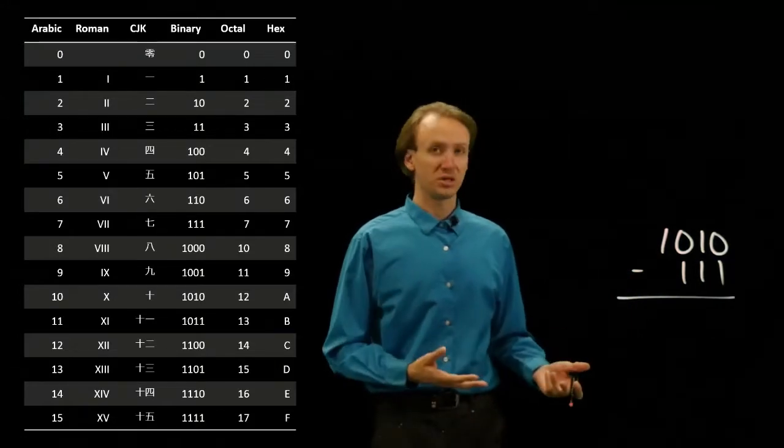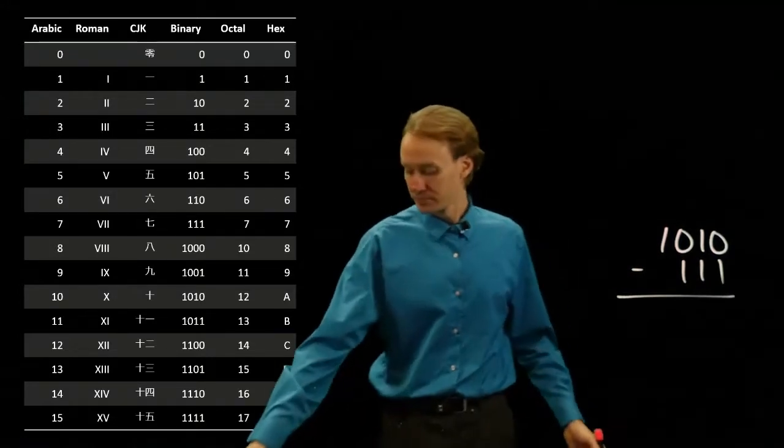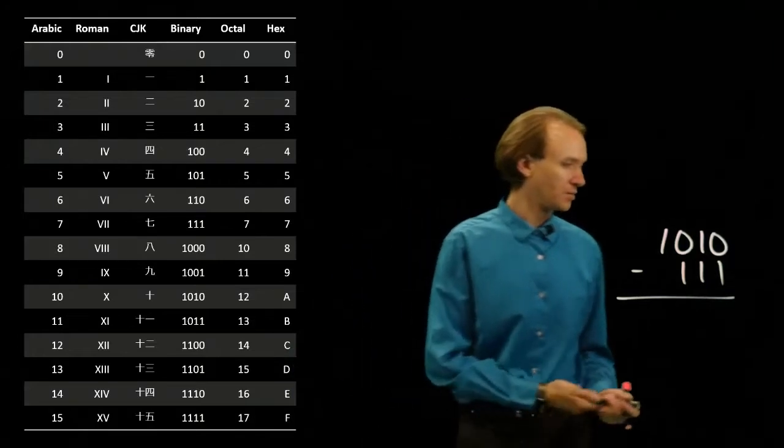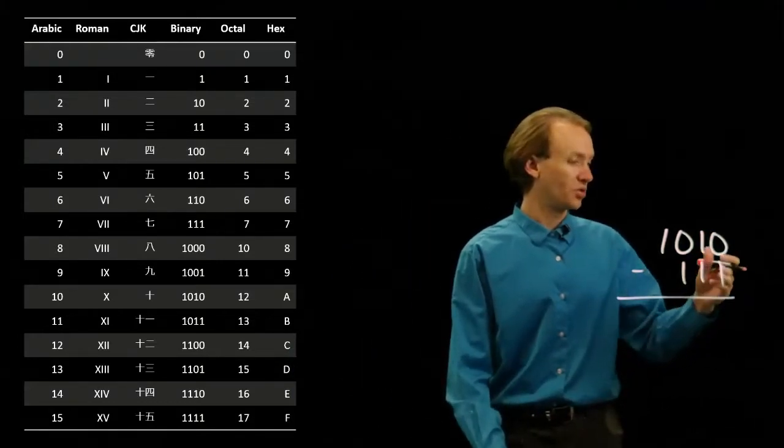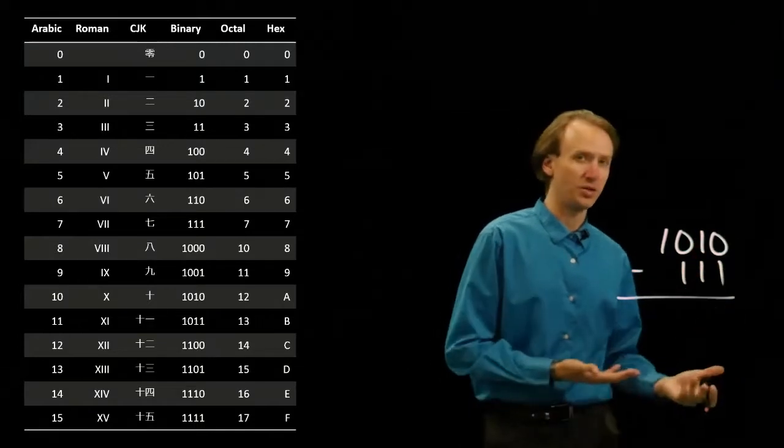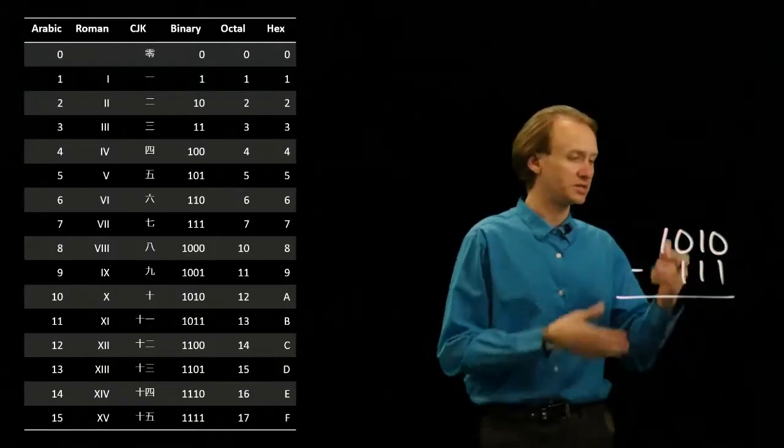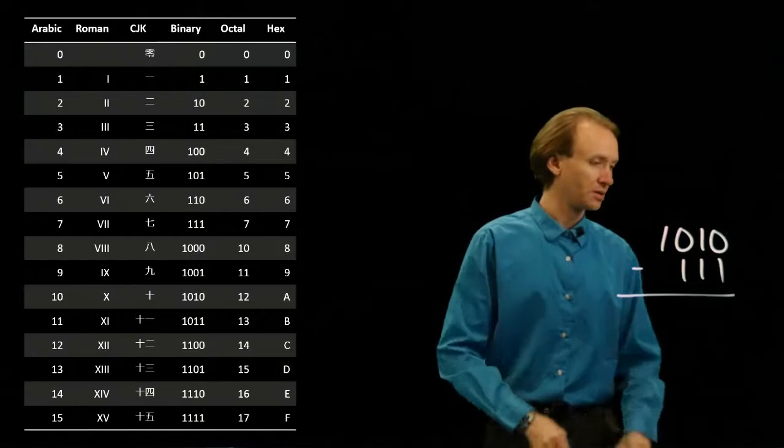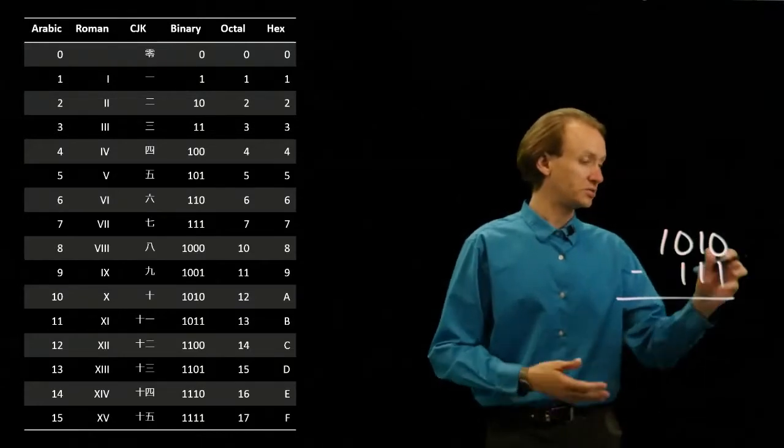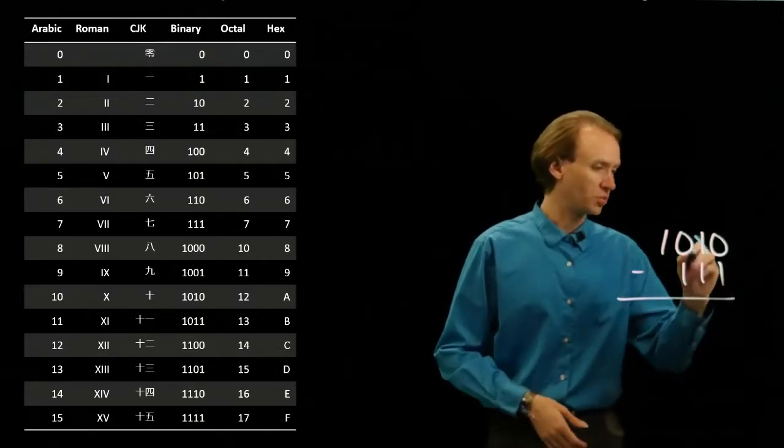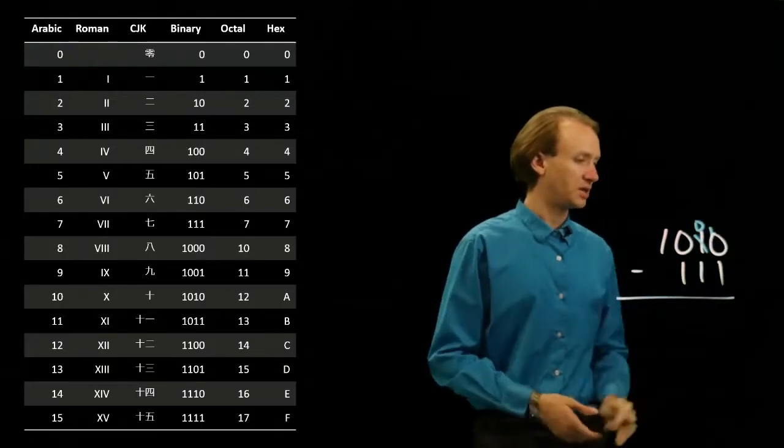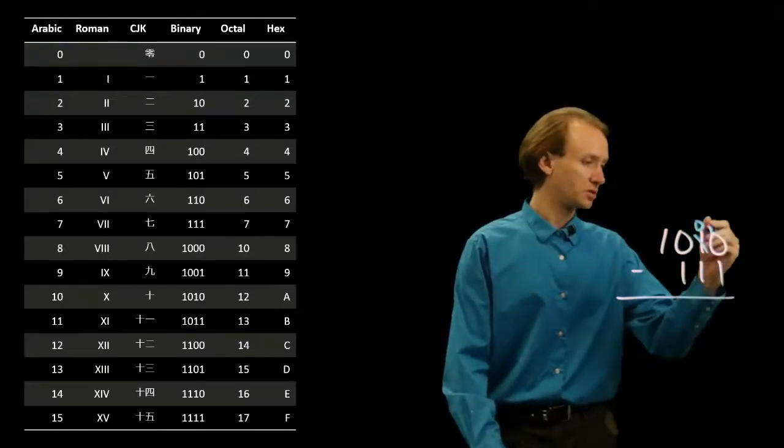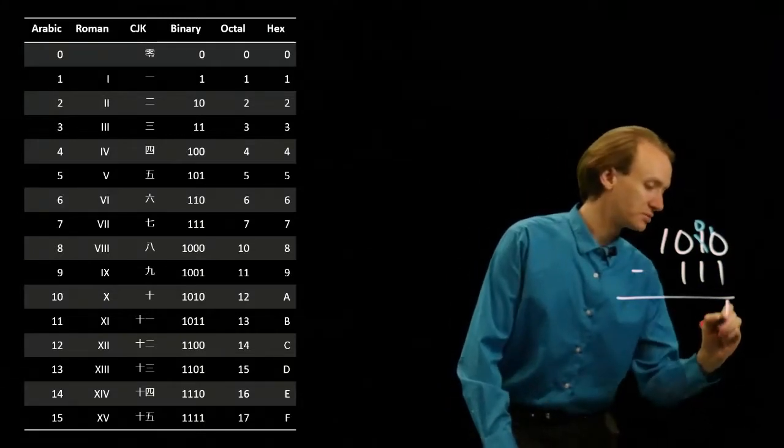So, I'm going to end up doing some borrowing this time, because 0 is less than 1, so I can't do 0 minus 1. I need to come over to the next place and borrow something. So, I can do 10 minus 1, so I'll borrow this 1 from here, leaving me with a 0. Now I've got a 10 here. So, 10 minus 1 leaves me with 1.